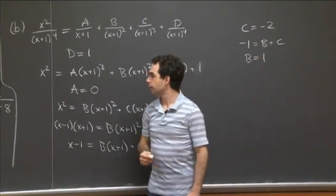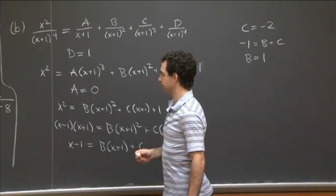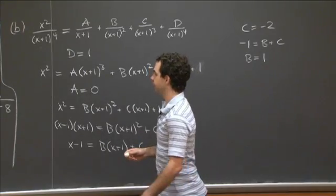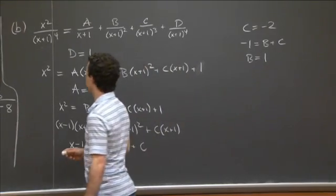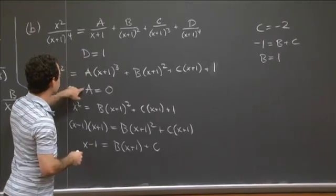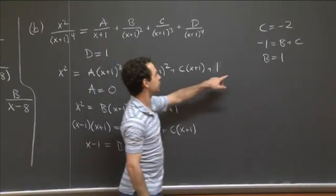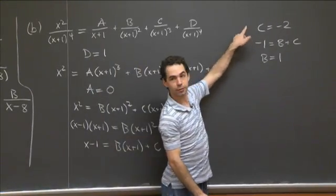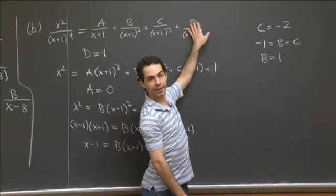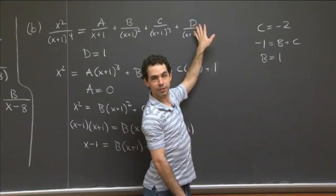So for part B, the coefficients are: A equals 0, D equals 1, B equals 1, C equals negative 2. That gives us the complete partial fraction decomposition.